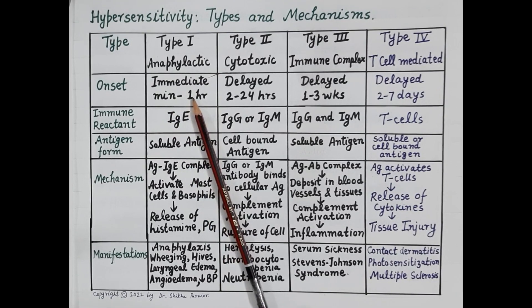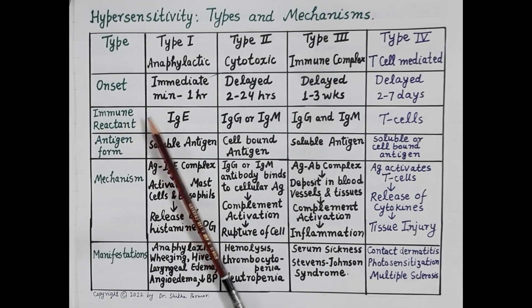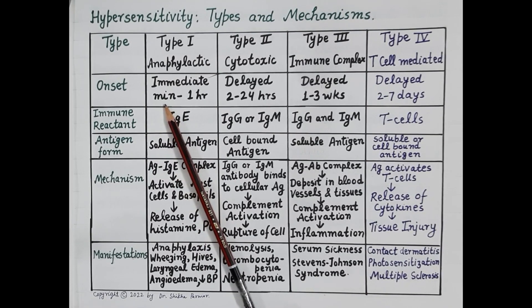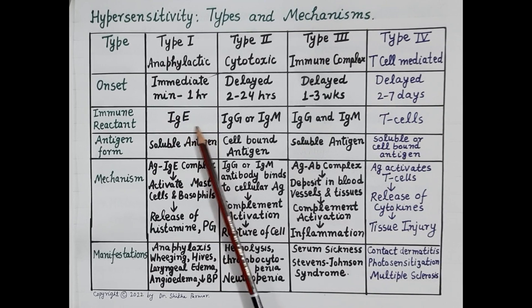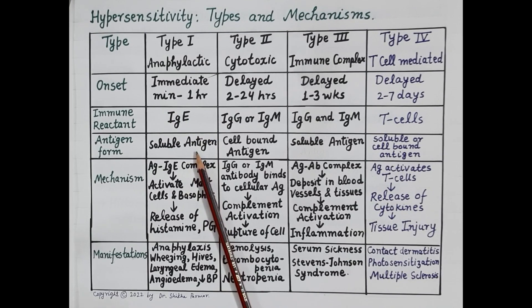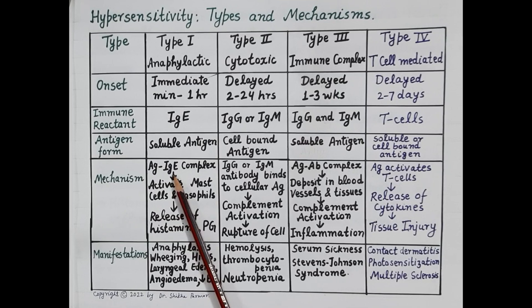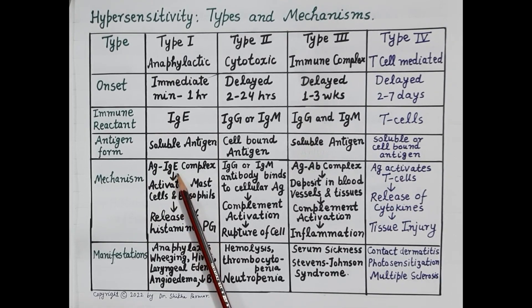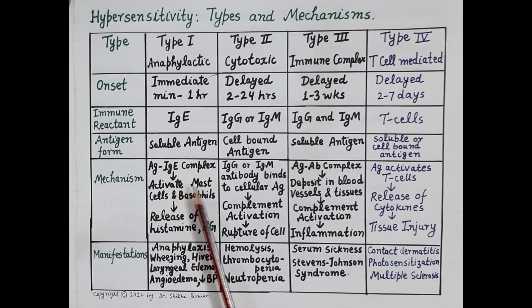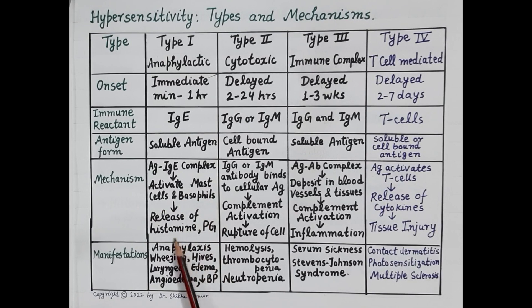In Type 1 allergic reactions, humoral immunity is activated, meaning antibodies are produced. Specifically, immunoglobulin E antibodies are produced and the antigen is a soluble antigen. The drug binds to immunoglobulin E antibodies, forming an antigen-antibody complex. This complex activates mast cells and basophils, causing release of mediators of inflammation — that is histamine and prostaglandins.